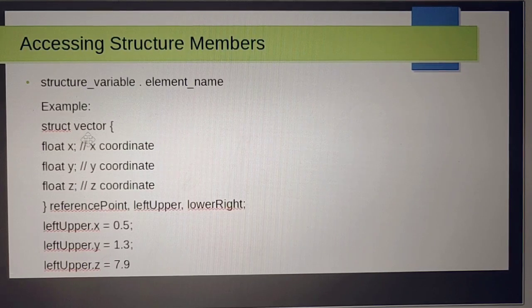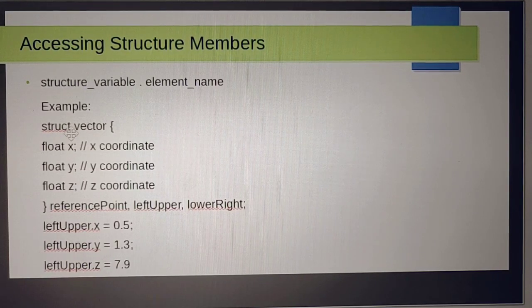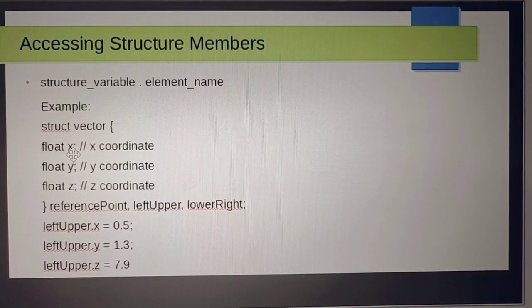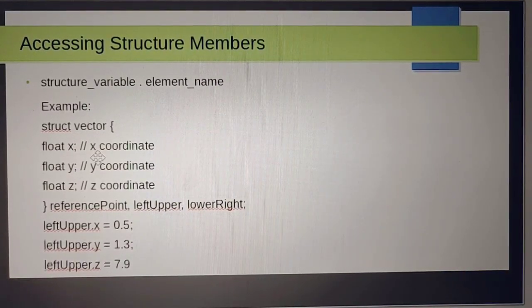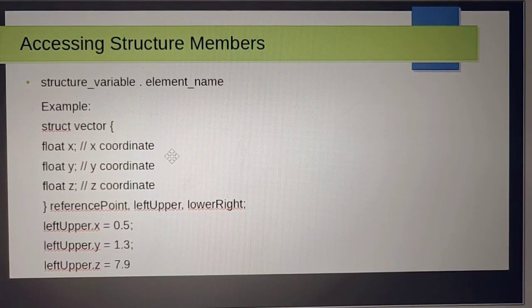For example, if we have taken struct vector—this is the name of the structure we have defined here—we can define float x, float y, and float z for x coordinate, y coordinate, and z coordinate.